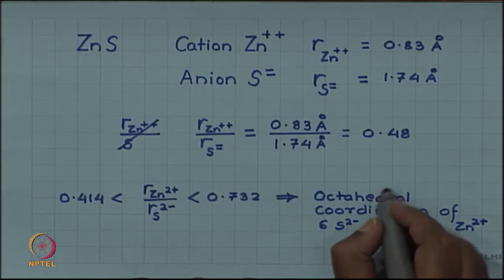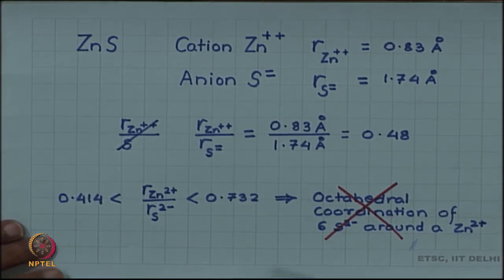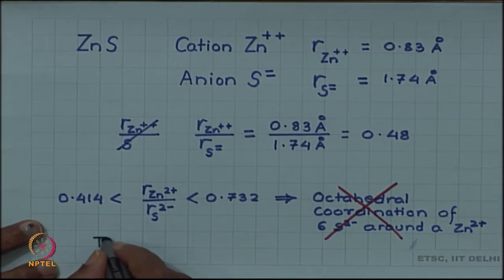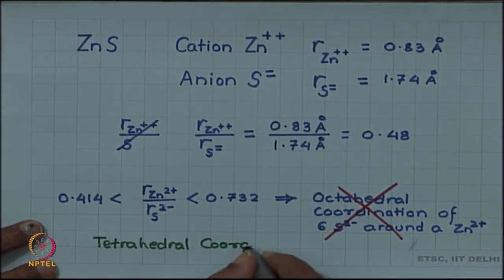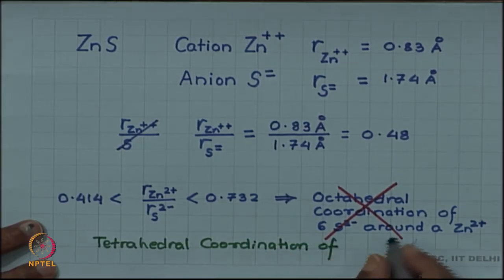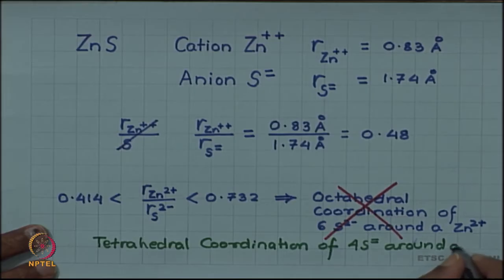But in this case, we are unfortunate. This prediction turns out to be wrong. The actual structure has a tetrahedral coordination of 4 sulphide ions around a zinc cation.